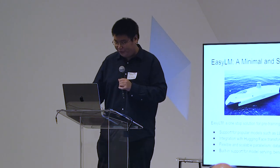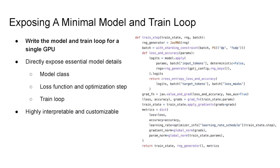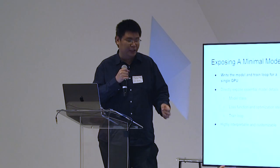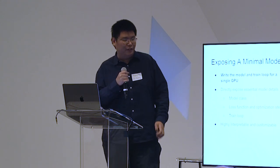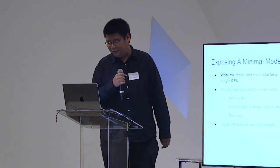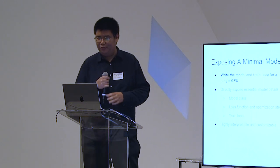When you write a language model in EasyLM, you mostly just write the model for a single GPU. Looking at the training code, it's essentially just computing the logits and computing the loss as if you're doing the computation on a single GPU. This makes it possible to directly expose all the essential model details — such as the model definition and the loss function — directly to the user without dealing with hundreds of lines of complicated code. This makes the language model really customizable.